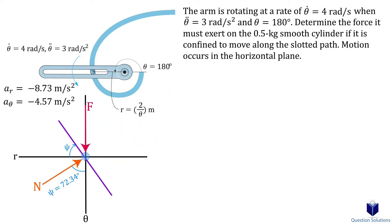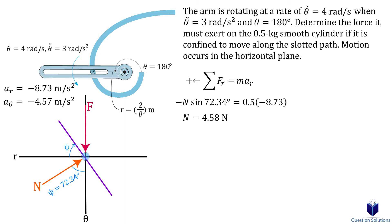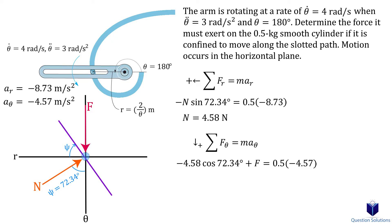Now that we have the angle, we can finally write our equations of motion. For the radial components, assuming forces to the left are positive, we have the radial component of the normal force equal to mass times radial acceleration. For the transverse components, assuming forces downward are positive, we have the transverse component of the normal force plus the applied force equal to mass times transverse acceleration. We got a negative value, which just means the force is coming from the bottom rather than the top as drawn. And that's our answer.